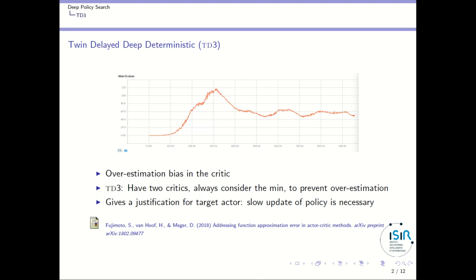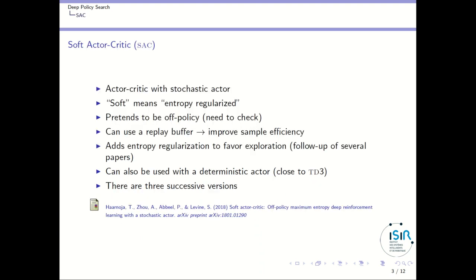Now let's switch to soft actor-critic. Soft actor-critic is also an actor-critic method, similar to DDPG and TD3. In the name, 'soft' means entropy regularized. So this is an actor-critic algorithm with some entropy regularization term that plays an important role in the quality of the convergence of the algorithm.